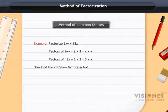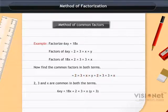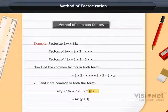Now, find the common factors in both terms. 2, 3, and x are common for both terms. Now, take out common factorization from both expressions. So, the expression becomes 6x(y + 3).